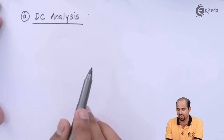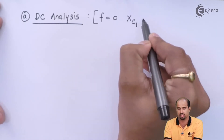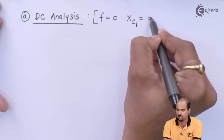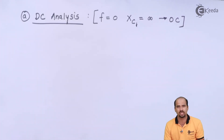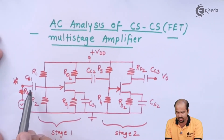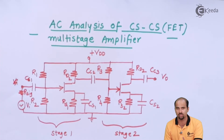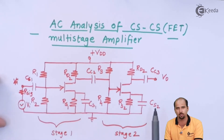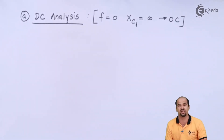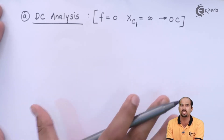For DC analysis, frequency is equal to 0. If frequency equals 0, all the capacitive reactances of coupling capacitors will become infinity, so we keep them as open circuits. We open all coupling and bypass capacitors connected externally — CC1, CC2, CS1, CS2, CC3 — all capacitances become open. Since CC2 is open, the input stage has nothing to do with the output stage, so input stage and output stage are independent of each other for DC analysis.